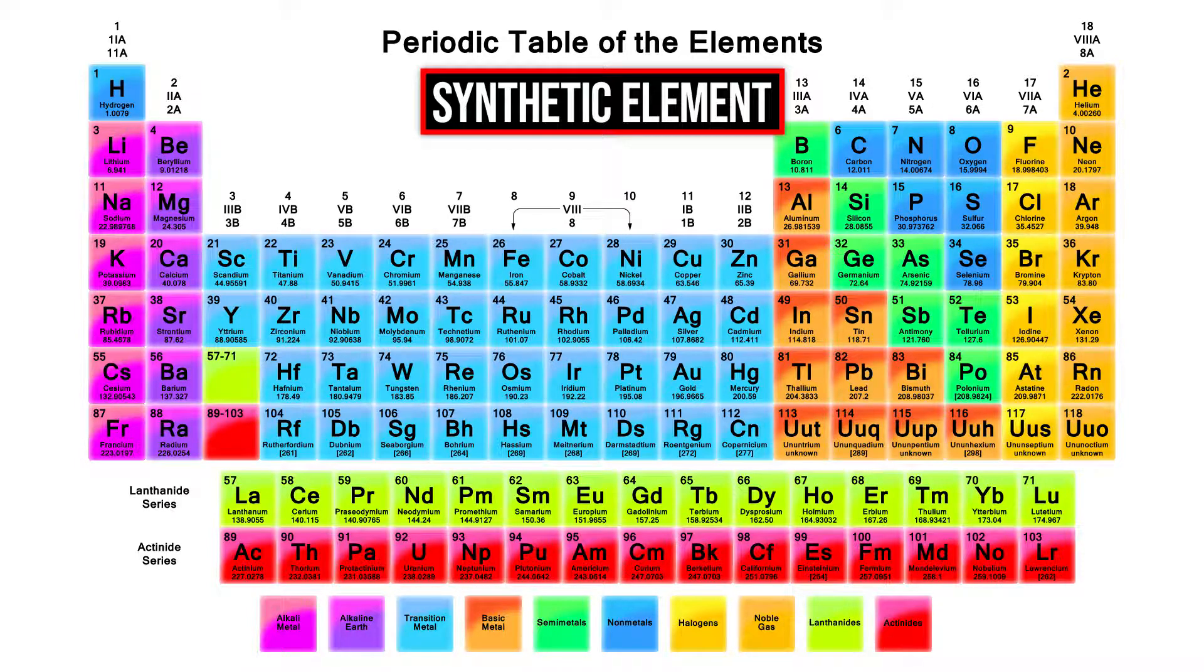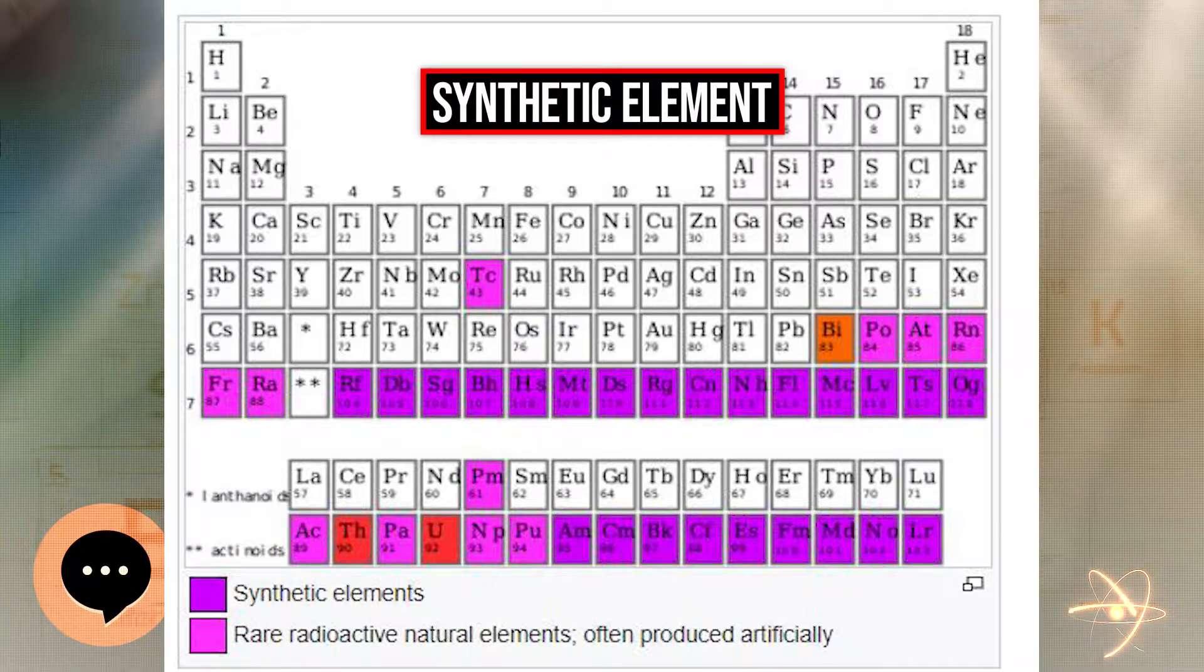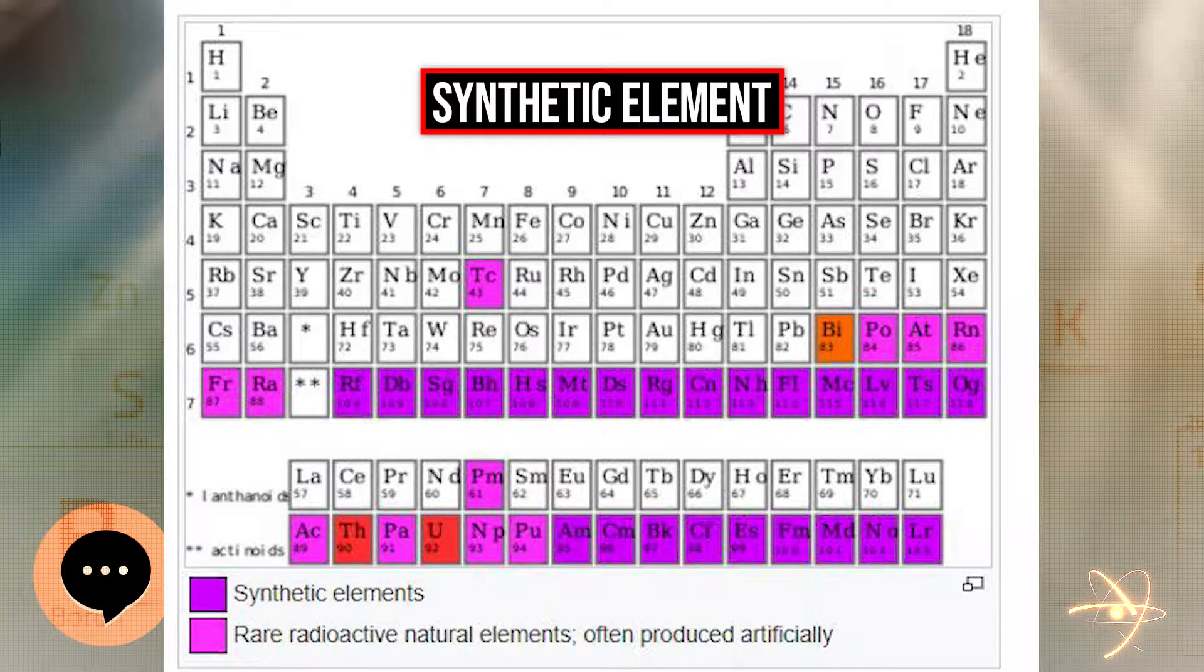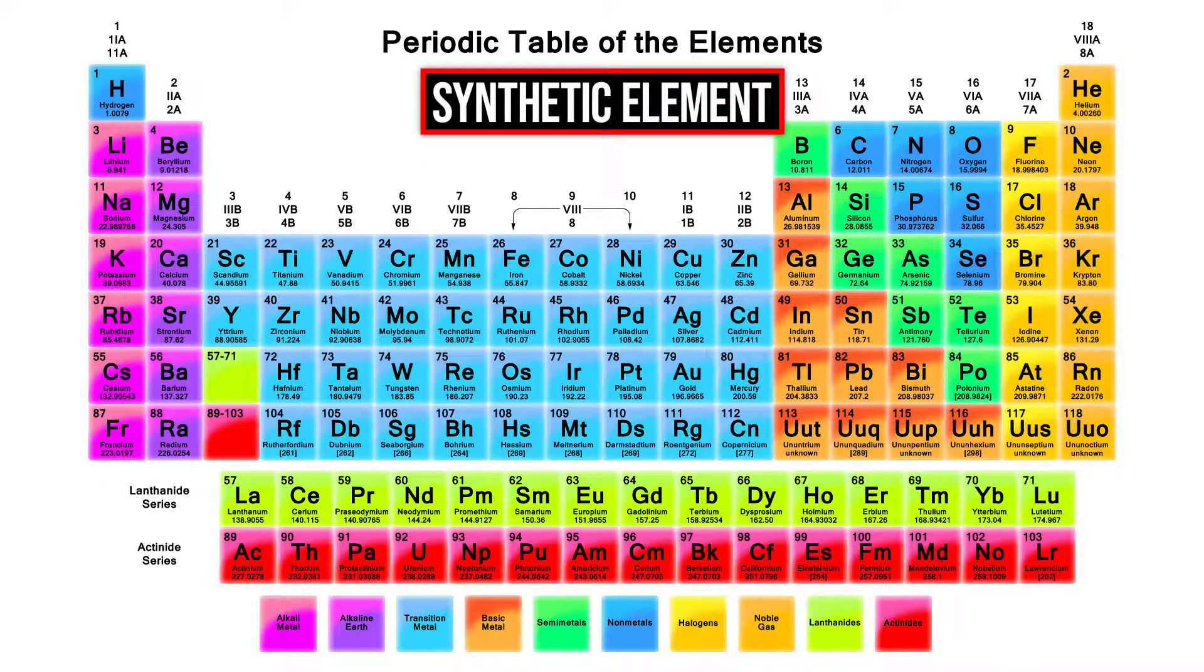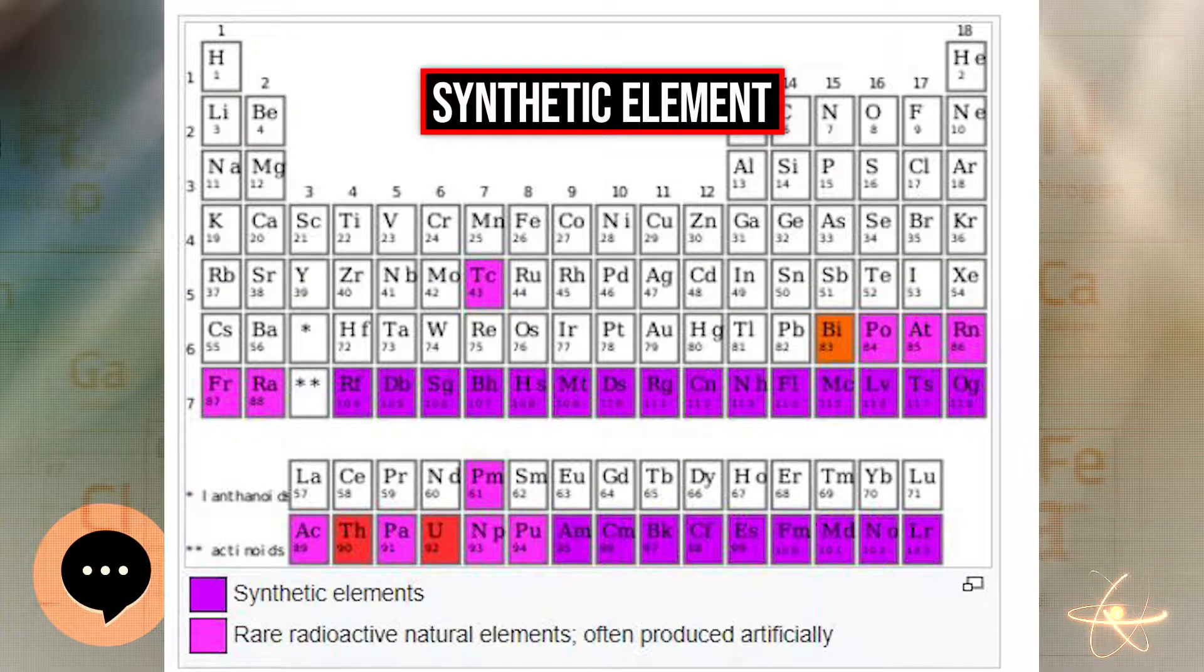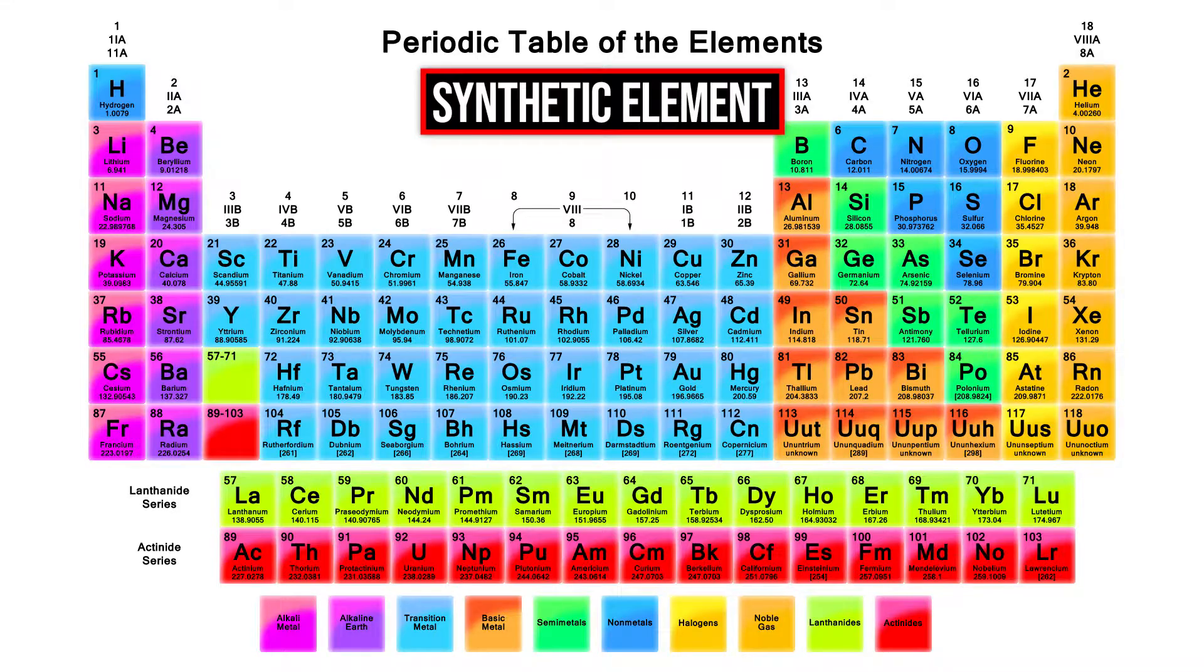The first discovered purely synthetic element was curium, synthesized in 1944 by Glenn T. Seaborg, Ralph A. James, and Albert Ghiorso by bombarding plutonium with alpha particles. The discoveries of americium, berkelium, and californium followed soon.